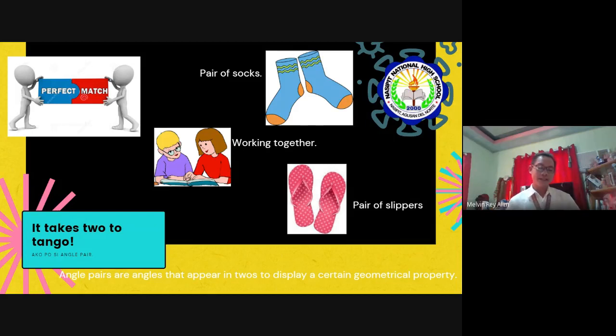Pag-usapan muna natin yung mga bagay na pares. Kasi every time na mapag-usapan natin ang complementary at saka supplementary angles, hindi ito nag-iisa. Ito ay dalawahan, kaya nga pares. Kagaya nang nasa slide natin, ano-anong mga bagay na nandito? Tingnan mabuti. Nandiyan ang pair of socks, pair of slippers, at pwede rin working together.